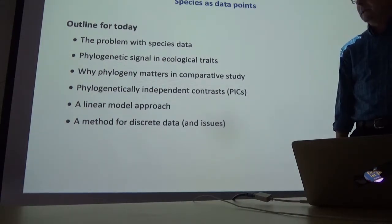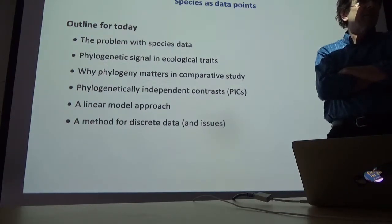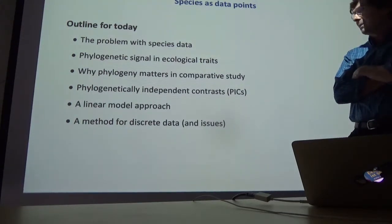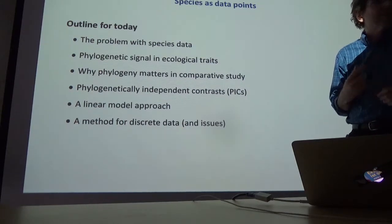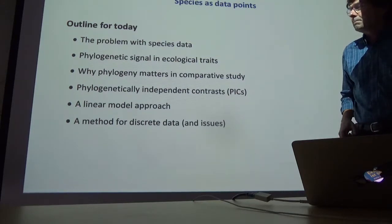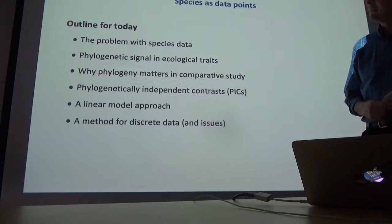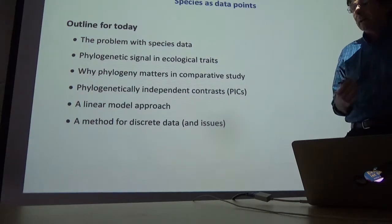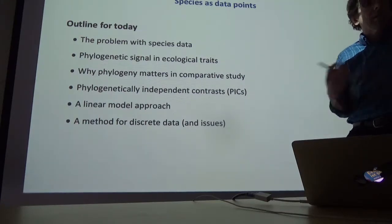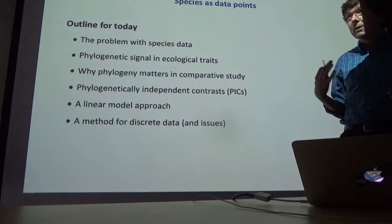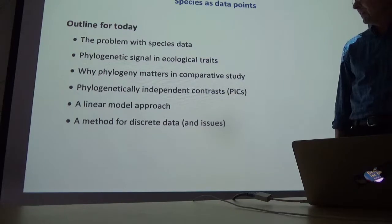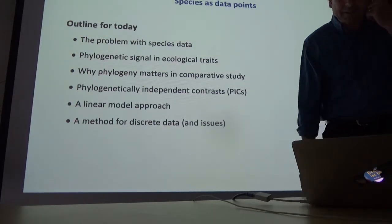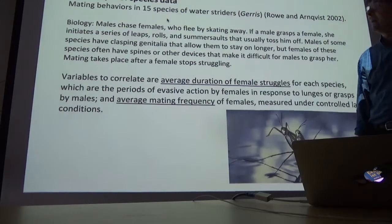One of the reasons why this has generated a lot of discussion and development of methods is that a lot of what we know about in biology is based on comparisons between species. The question often arises: how reliable are the kinds of comparisons we typically make when we know that species aren't independent? That's because they are related to varying degrees because of phylogenetic history. The methodology started to erupt in the 1980s as people started to raise this question and whether we could come up with methods that would help us.